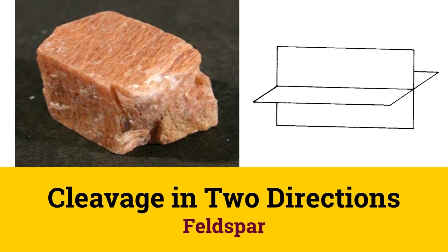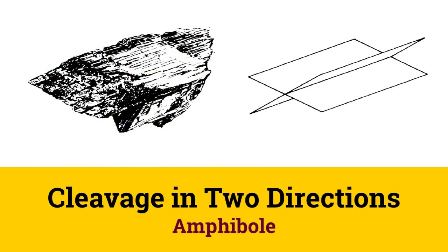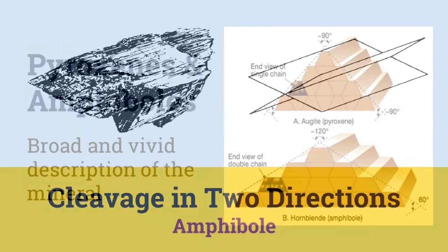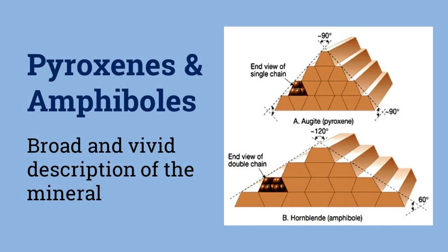Minerals like feldspar have cleavage in two directions. These two planes may be perpendicular to each other, as they are in feldspar, but they may also not be perpendicular, as in hornblende, where it makes an angle of 120 degrees. Cleavage is also helpful to distinguish between pyroxenes and amphiboles. Both minerals are generally dark-colored and have two sets of good cleavage. However, the two cleavages of pyroxenes intersect at 93 degrees, whereas the two cleavages of amphiboles intersect at 120 degrees, allowing them to be differentiated.